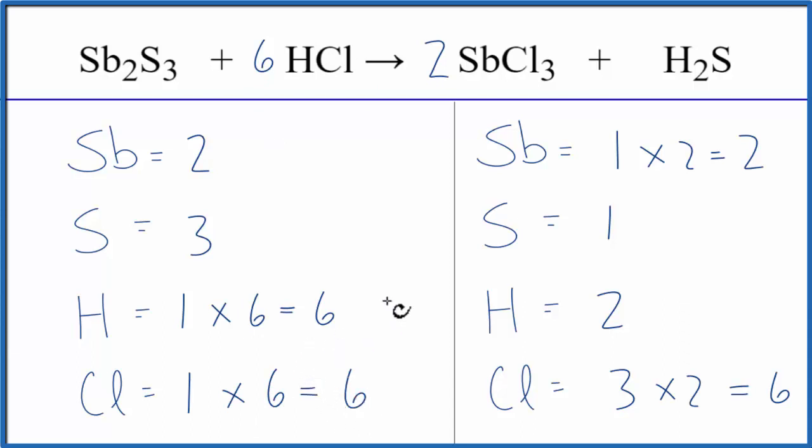Let's take a look at the sulfurs here. We need 3 of those, so let's put a 3 in front of the H2S. Now we have 2 times 3, that gives us 6 hydrogens. That actually balances the hydrogens. And then 1 times 3, that balances the sulfur. And we're done. This equation is balanced.